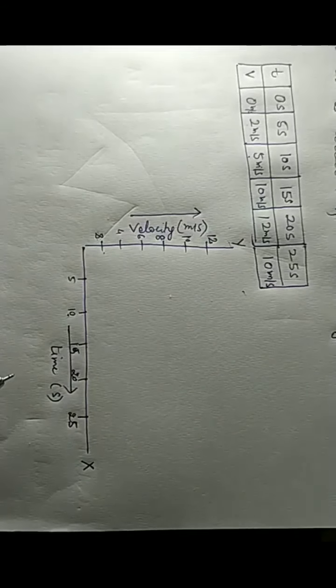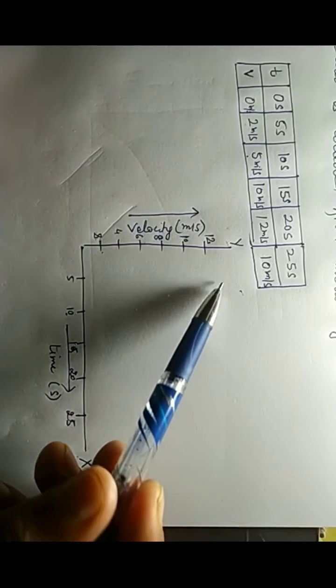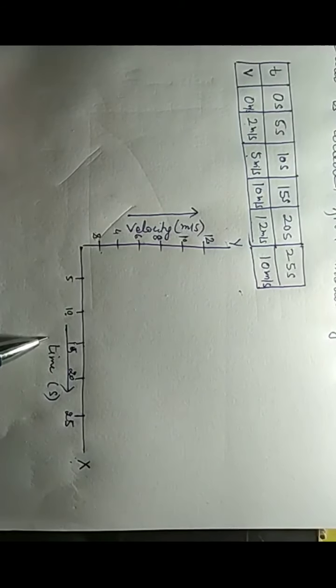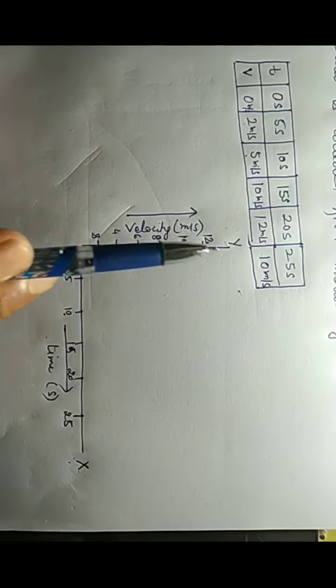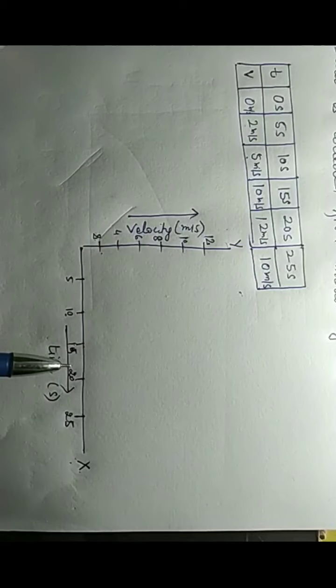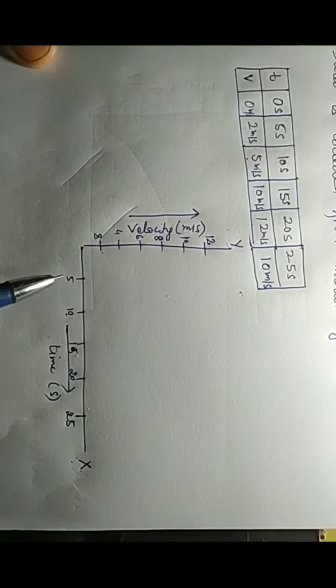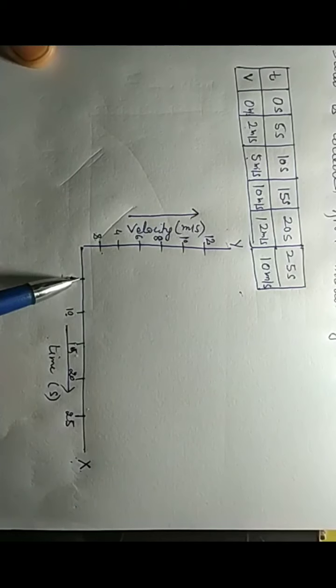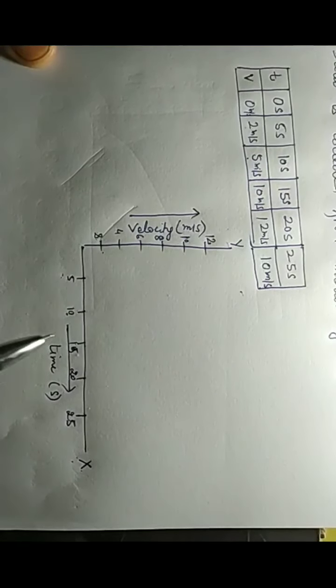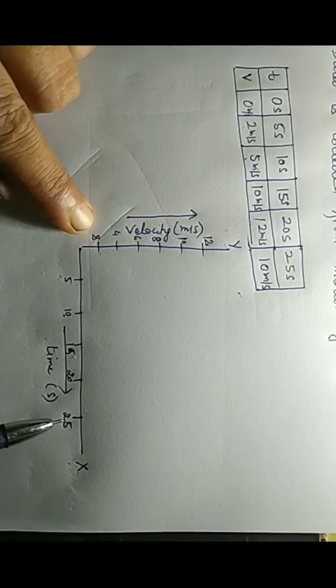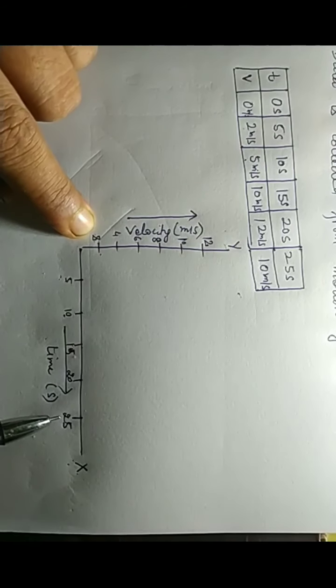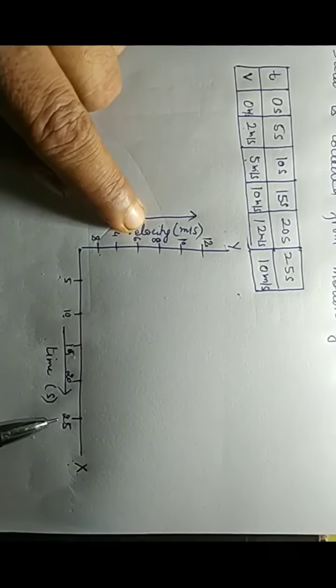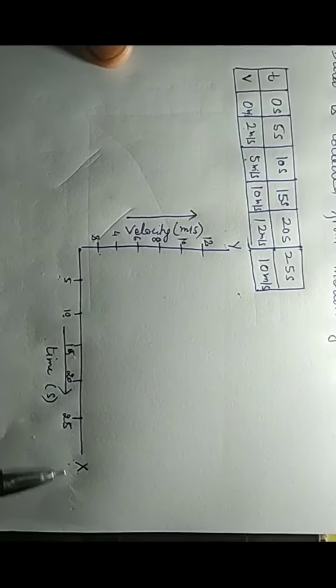To draw the graph, first I assign the axes: the x-axis represents time and the y-axis represents velocity. Along the x-axis, I mark equal divisions at 5, 10, 15, 20, and 25 seconds. Along the y-axis, I assign velocity starting from 2 meters per second, then 4, 6, 8, 10, and 12 meters per second.